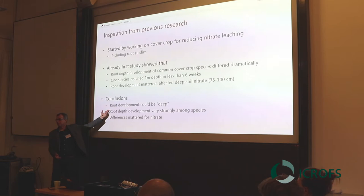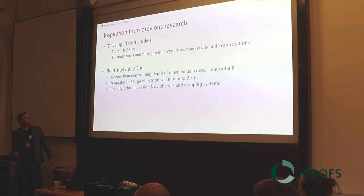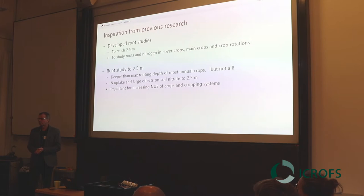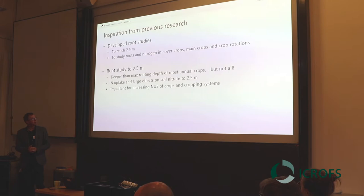The conclusions were that root development could be deep, and that one meter was not enough. Root development varied very strongly, so there was something to work with, and we could see that it mattered. Over later years, one of the things done was to develop the mini rhizotron system and field setup so we could work to two and a half meters instead, studying not only cover crops but roots and nitrogen in relation to cover crops, a range of main crops, and also rotations — what happens when you put this into the context of a rotation, because a crop is part of a system.